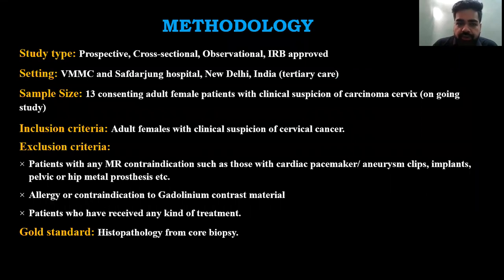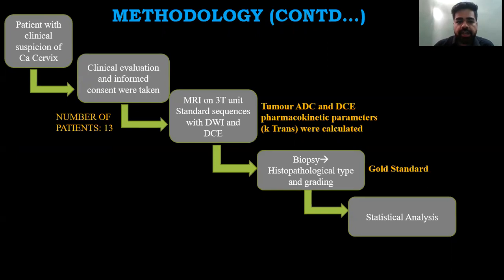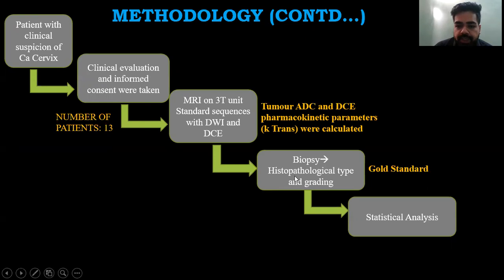Methodology: This was a prospective cross-sectional observational institute review board-approved study at a tertiary care center, VMMC's Satyajam Hospital. Sample size was 13 consenting adult female patients with clinical suspicion of carcinoma cervix; it is an ongoing study. Inclusion criteria were adult females with clinical suspicion of cervical cancer. Exclusion criteria were patients with MRI contraindications such as cardiac pacemaker, allergy or contraindication to gadolinium contrast, or patients who received any prior treatment. The gold standard was histopathology from core biopsy. Patients were clinically evaluated, informed consent was taken, followed by MRI with standard sequences including DWI and DCE. Tumor ADC and DCE pharmacokinetic parameters — K-trans — were calculated, followed by statistical analysis.